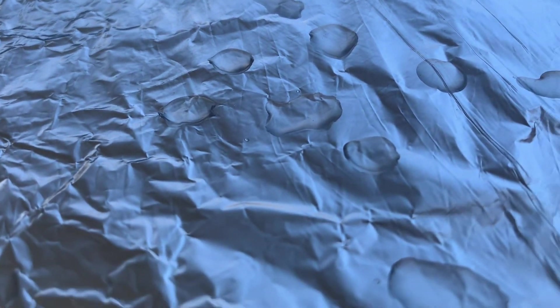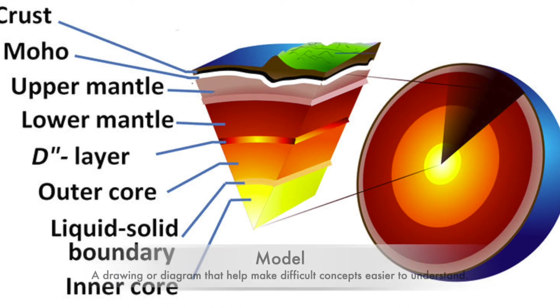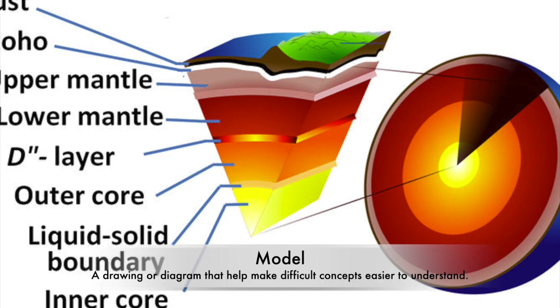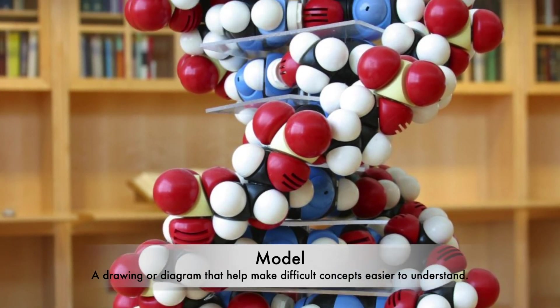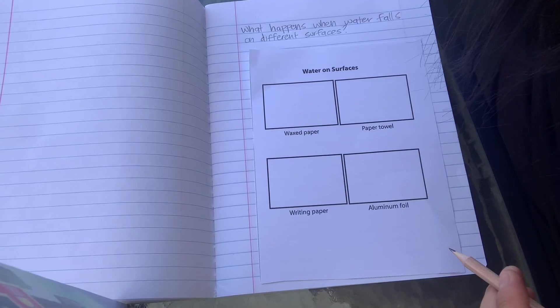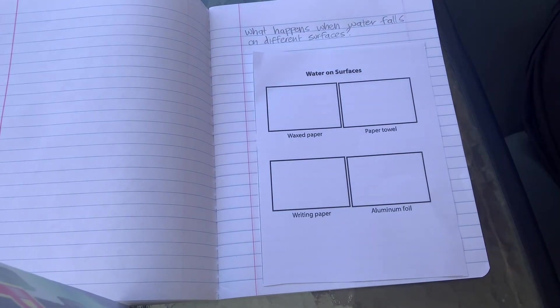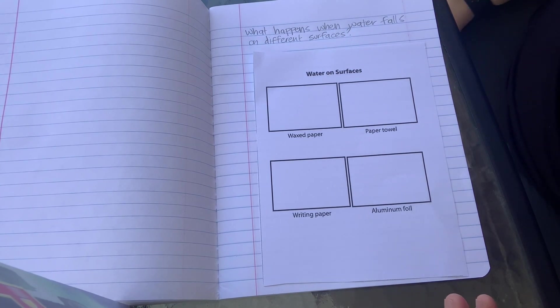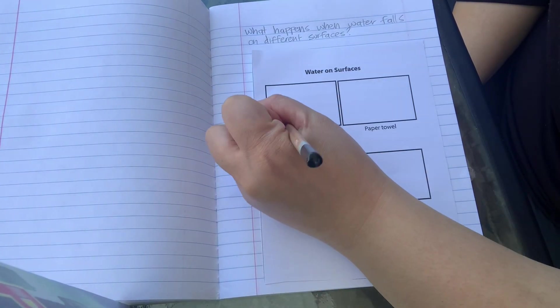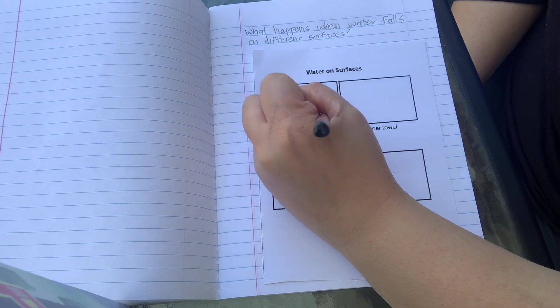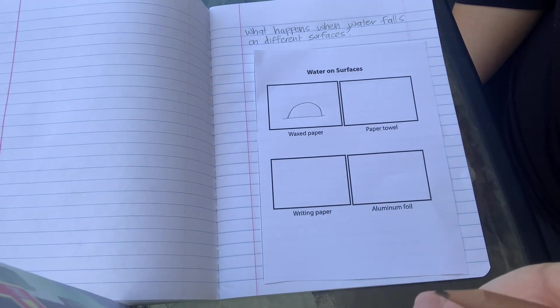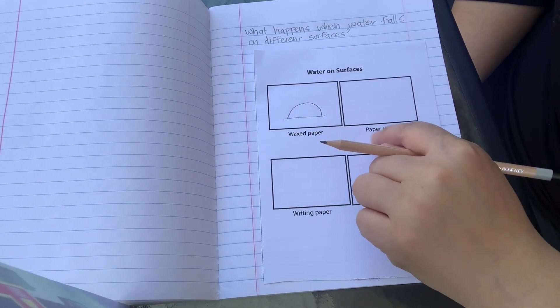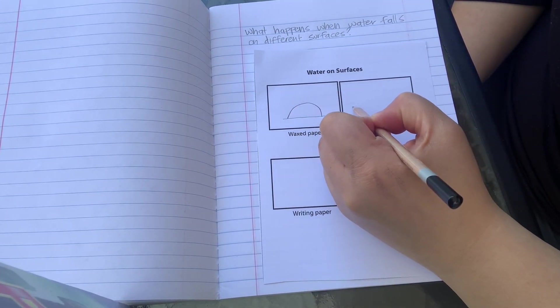One way that we recorded our data to show this was by drawing a model. Models help scientists visualize and help in understanding things that can be hard to grasp. On our chart here, we were able to draw how we observed what happened when water came in contact with the materials. So for my waxed paper box here, I'm just drawing the dome shaped water droplet since my surface was very waterproof.